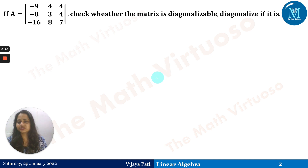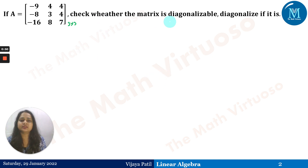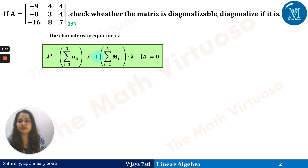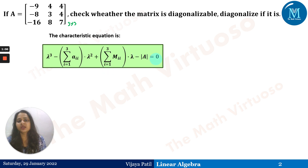For the first question, we have a 3×3 matrix. Check whether the matrix is diagonalizable, and diagonalize it if it is. We use the characteristic equation: λ³ minus (Σaᵢᵢ, i=1 to 3)λ² plus (Σmᵢᵢᵢ, i=1 to 3)λ minus det(A) = 0. I suggest following the previous session where I discussed repeated eigenvalues in detail.